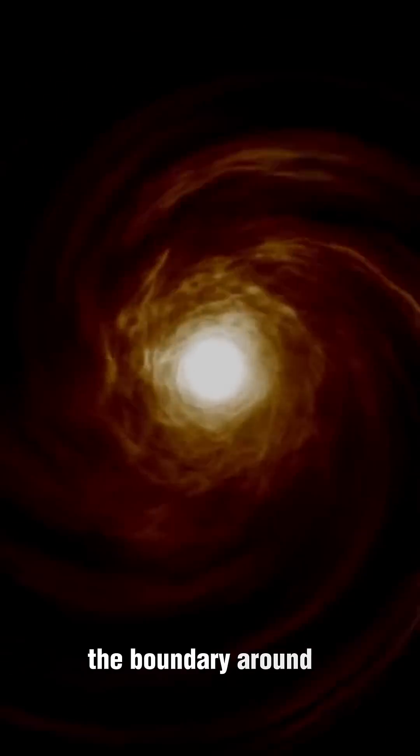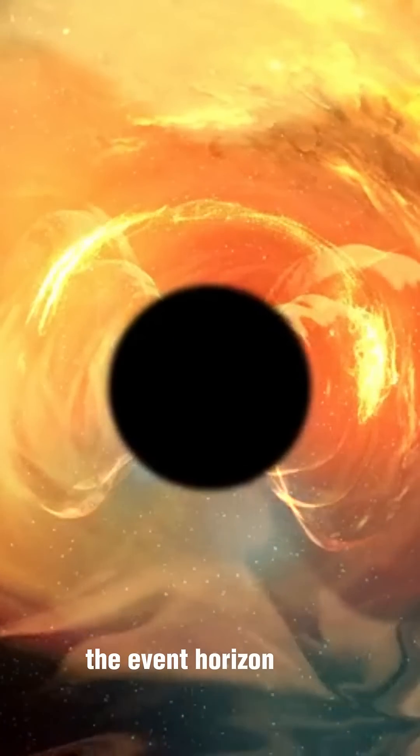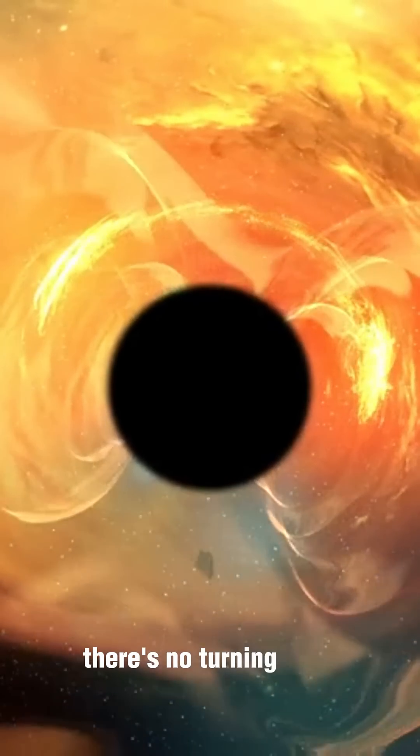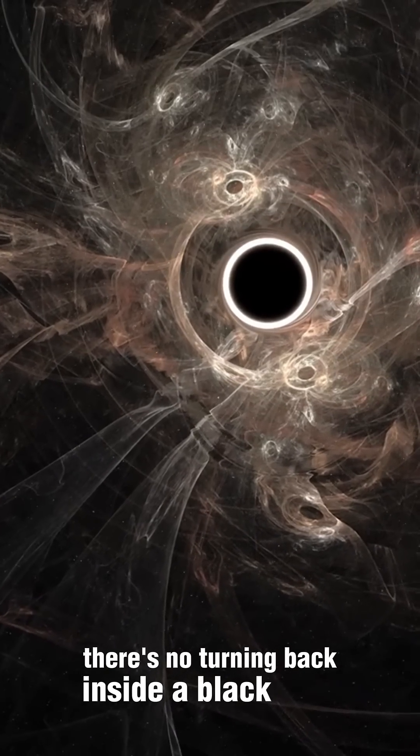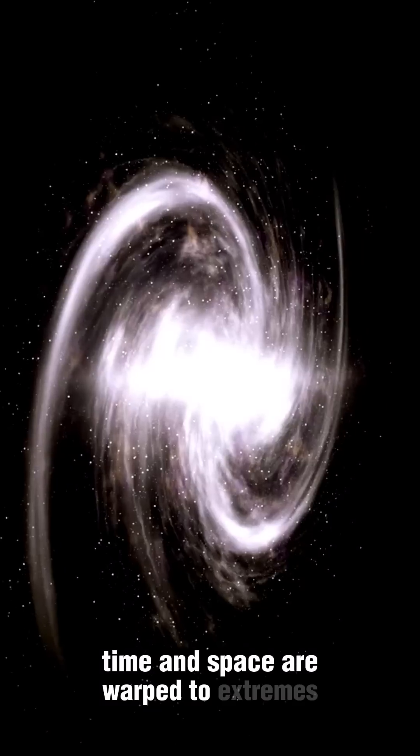The boundary around a black hole is called the event horizon. Once you cross it, there's no turning back. Inside a black hole, time and space are warped to extremes.